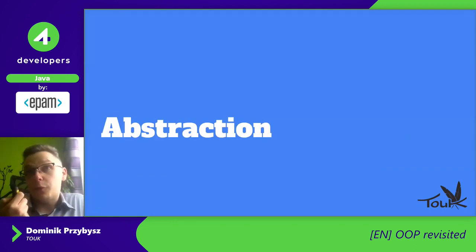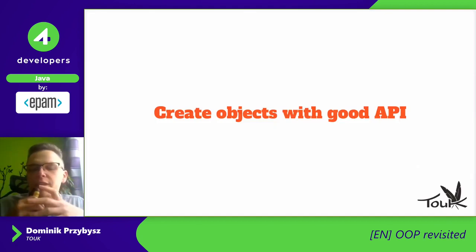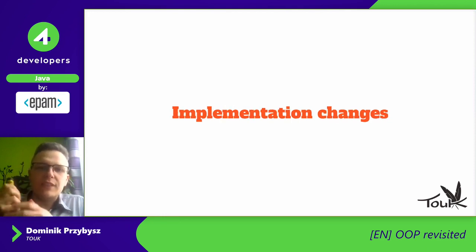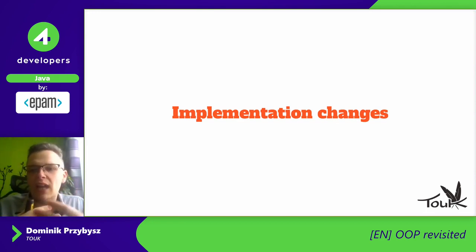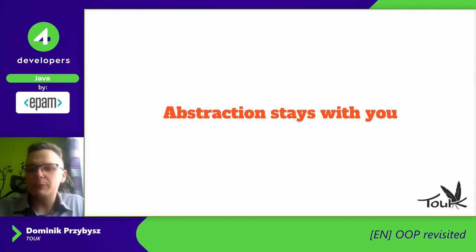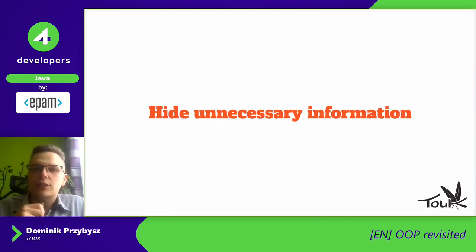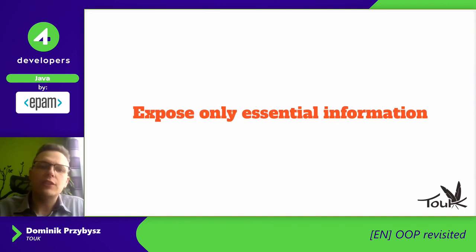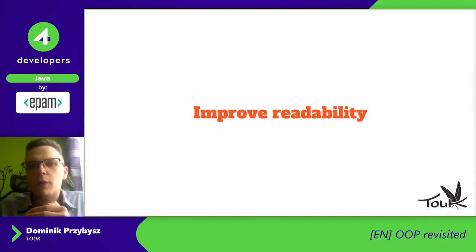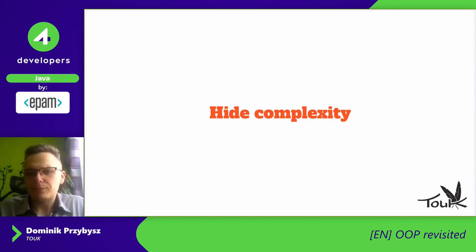Abstraction, for me, is best explained as creating an object with a good and useful API. Implementation changes very often — how we keep everything inside, what algorithms we use — but some abstractions, some interfaces and descriptions useful to other objects, should stay with us for much longer. When we achieve good abstraction, we hide unnecessary information inside the object and expose only essential information, improving readability and hiding complexity.